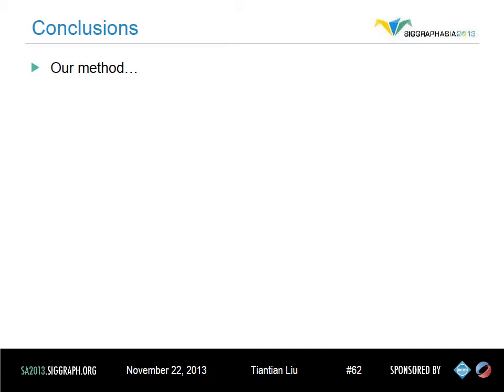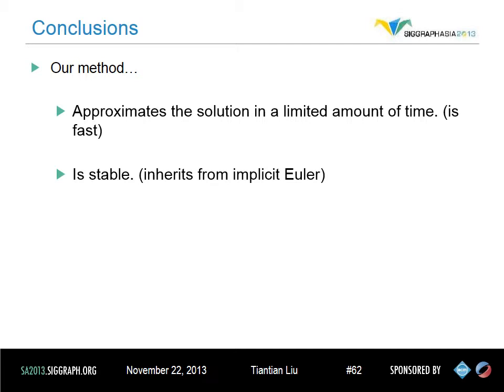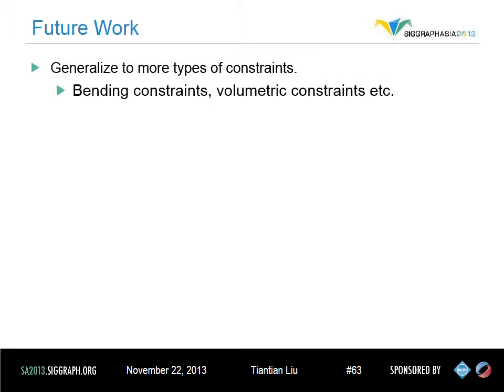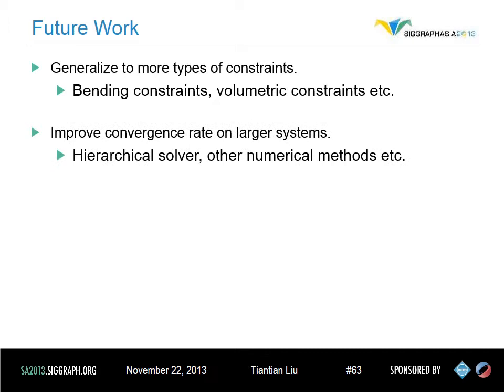To summarize: our method can produce a very fast approximation given a limited time budget. It inherits stability from implicit Euler's method, so it is extremely stable. It converges to an exact solution, so it can be used for quick simulation previews and for bootstrapping Newton's method. The workflow is very clear and can be implemented quickly, and we will release our source code on the project website. In the future, we want to generalize it to more types of constraints such as angular bending constraints and volumetric constraints, and improve convergence on larger systems using hierarchical solvers or other numerical methods.